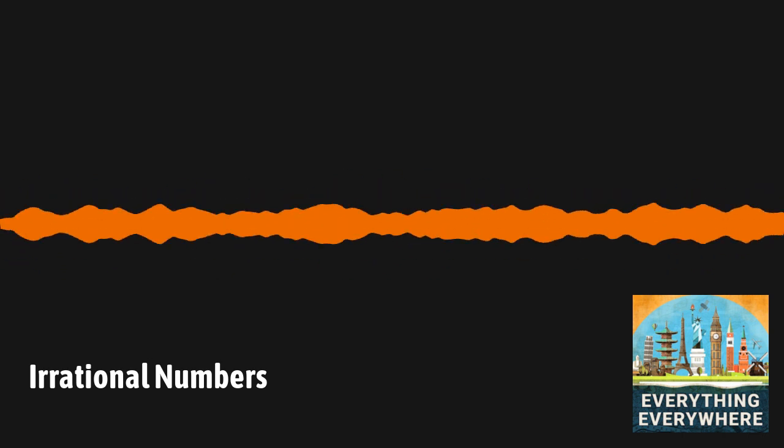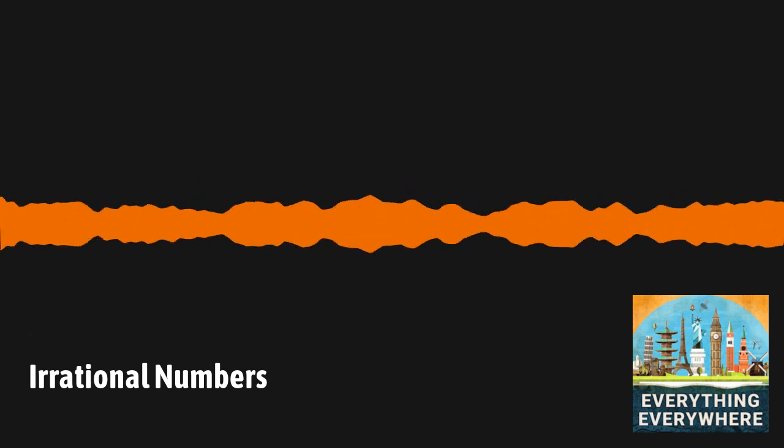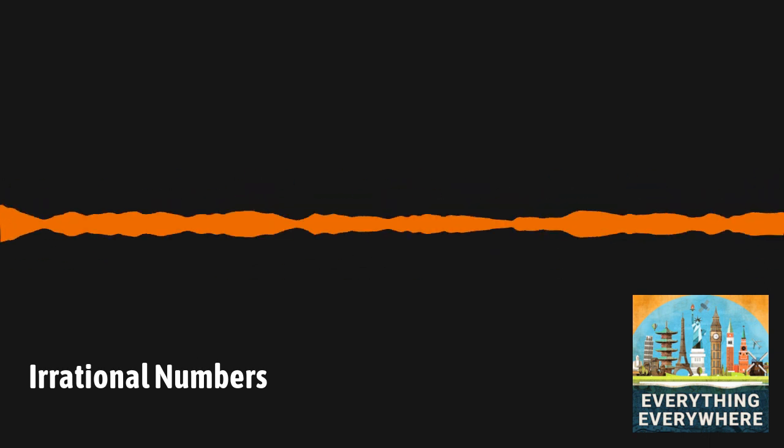The root symbol actually consists of two parts. The front part, which looks like a checkmark, is called the radical symbol or the radix. The line over the top of the number is known as the vinculum.